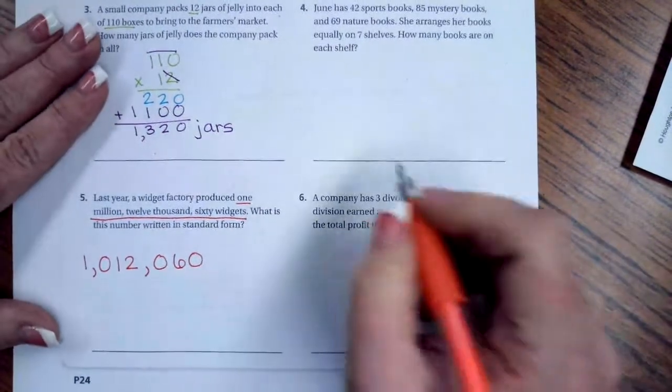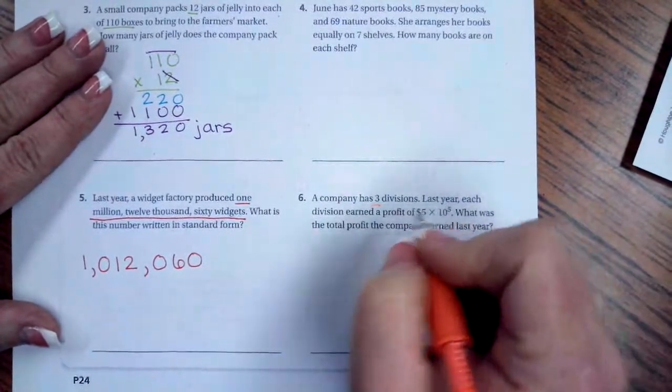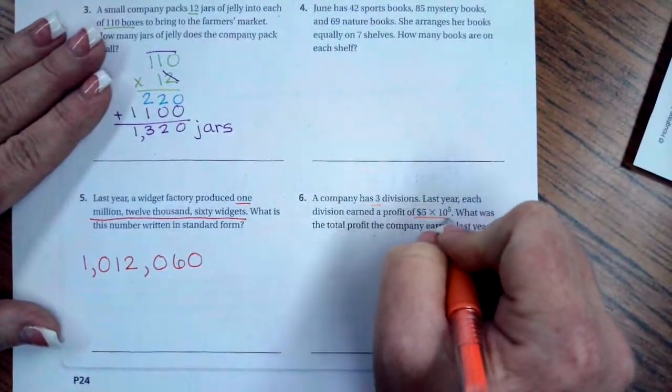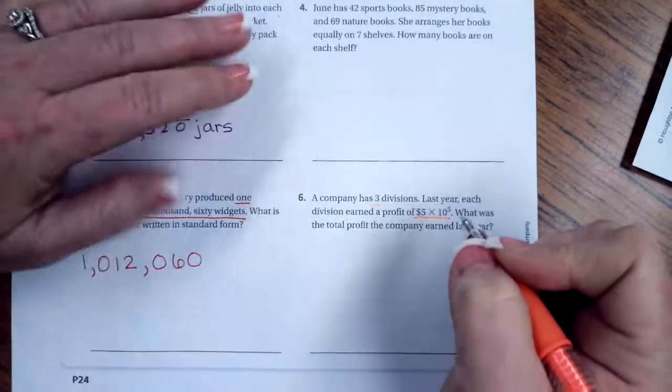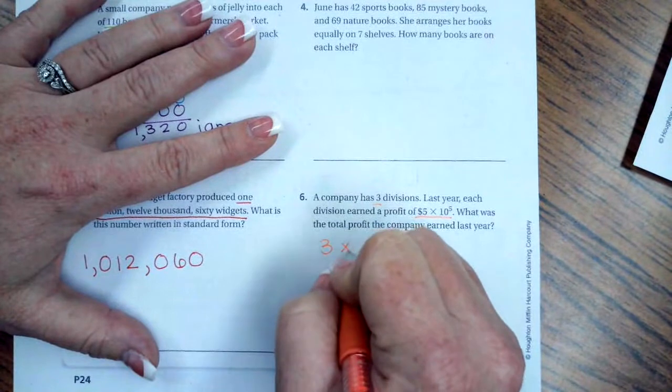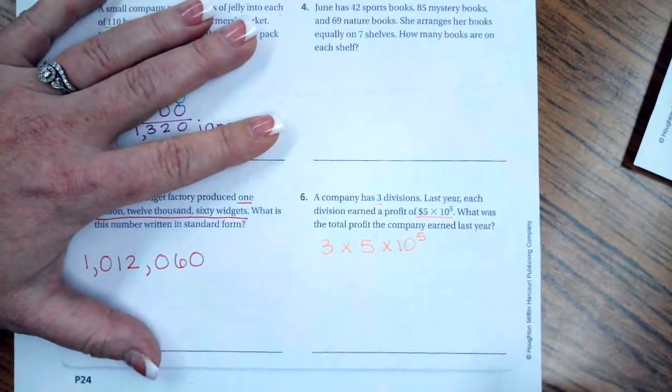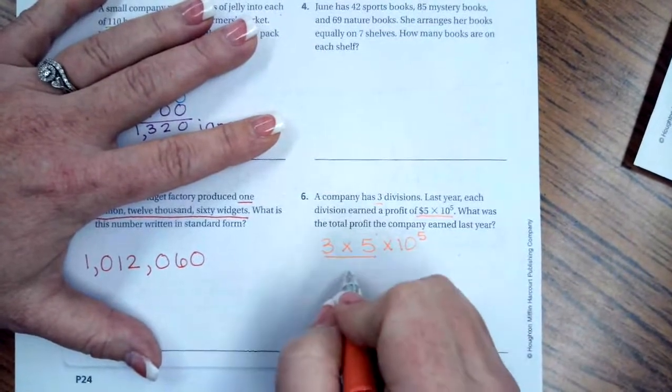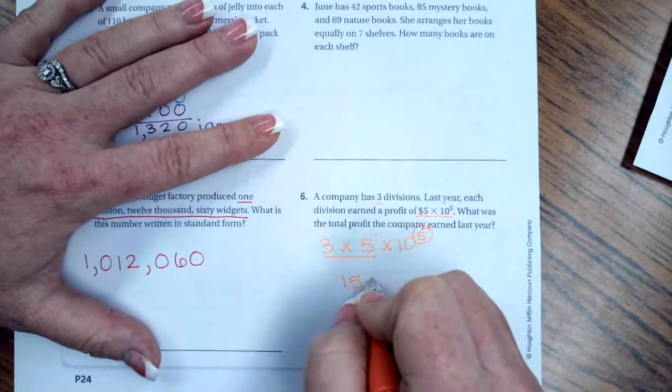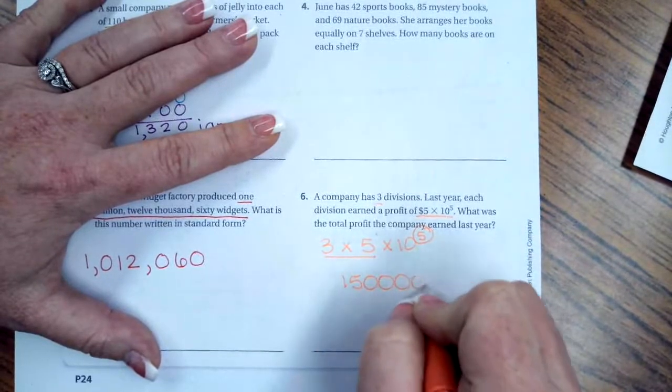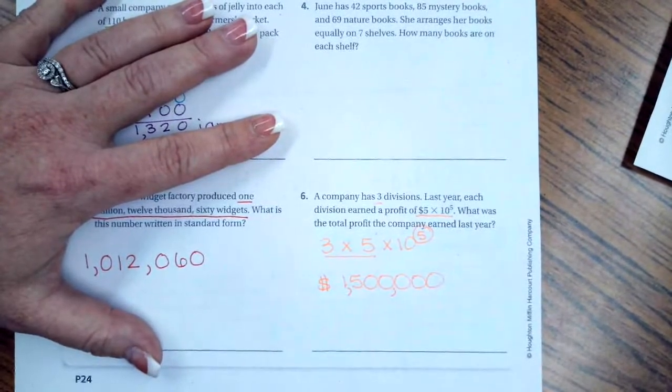A company has three divisions. Last year, each division earned a profit of 5 times 10 to the 5. What was the total profit the company earned last year? So I have to do 3 times 5 times 10 to the 5. Now, we all know that this means 3 times 5 is 15, and then I need to add on five zeros. 1, 2, 3, 4, 5. $1,500,000.